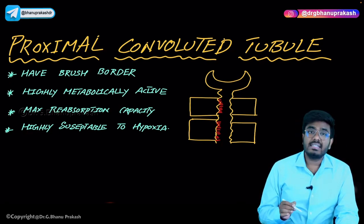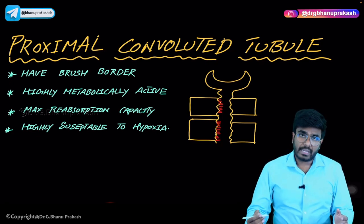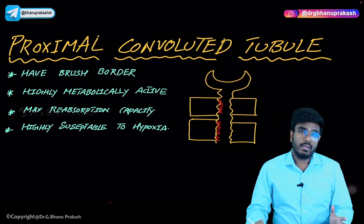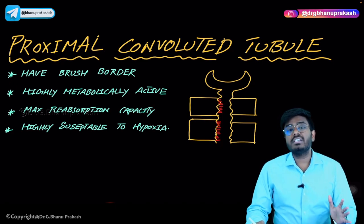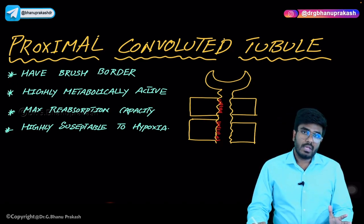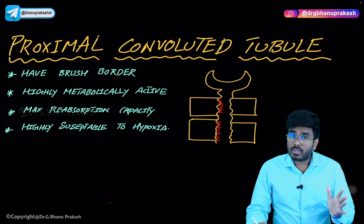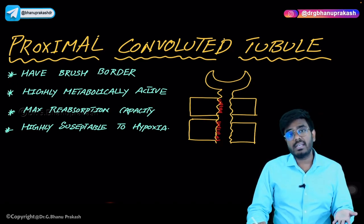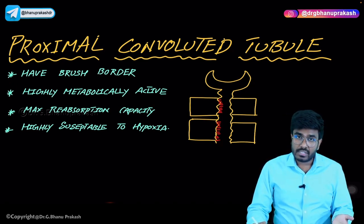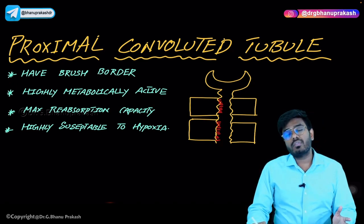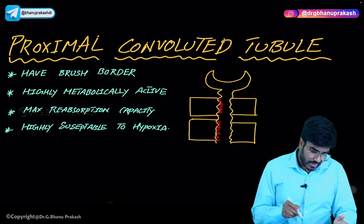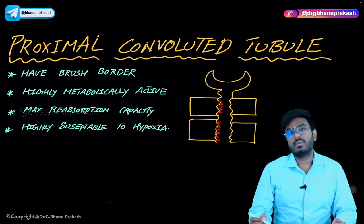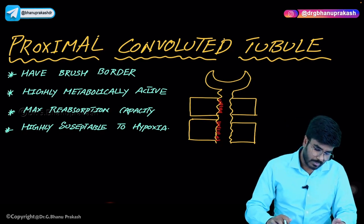Because the PCT is highly metabolically active, it demands more oxygen and more blood supply. So in conditions of ischemia, the PCT is the most susceptible region. Which part of the nephron is mainly affected in ischemic conditions? It is the PCT. The PCT is highly susceptible to hypoxia.